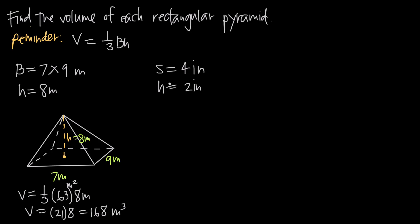For another rectangular pyramid example, we could be given a problem where the side length of the base is four inches. We haven't been given the length and width separately — only the side length — which means the base is a square. So we'll call both dimensions four inches, and the height here is going to be two inches.